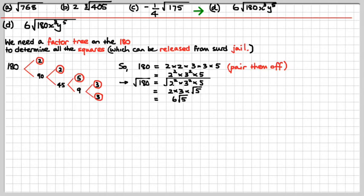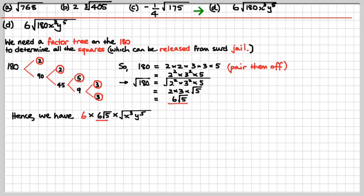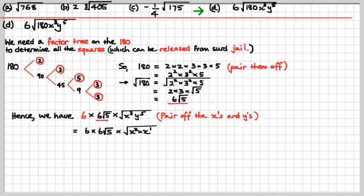So we can thrive — the square root of 180 is 6 root 5. Now let's deal with the 6 from the original question: 6 times 6 root 5 times the square root of x cubed times y to the 5. We've got to pair the pronumerals up too, because that's the only way they get out of square root jail. So: x squared times x to the 1 makes three x's, and I've paired two of them off. For the y's: y squared times y squared times y to the 1 makes five all told. I've simplified 6 times 6 root 5 to 36 root 5.